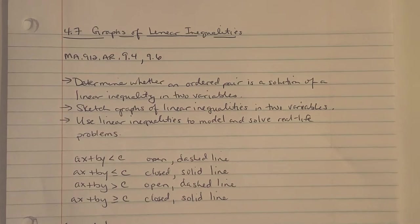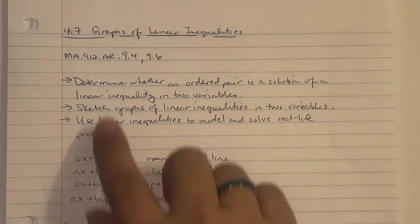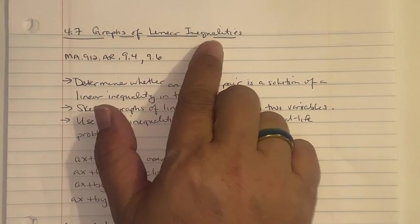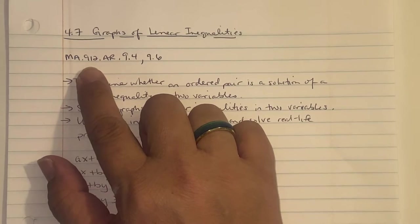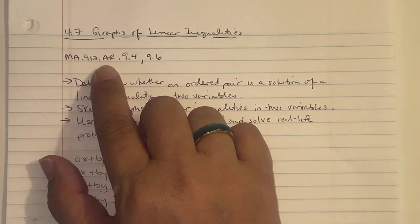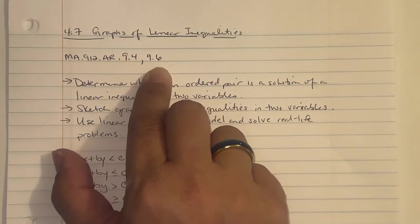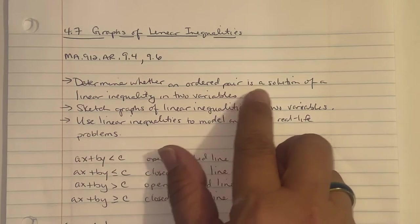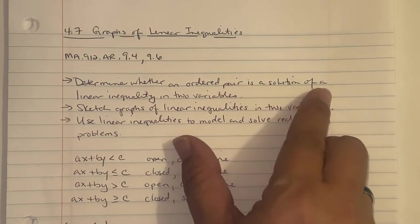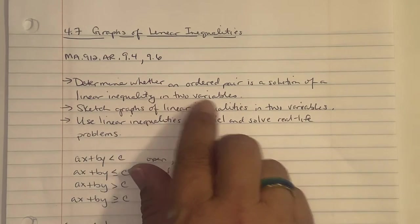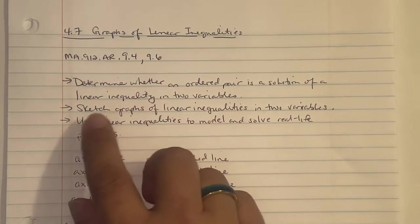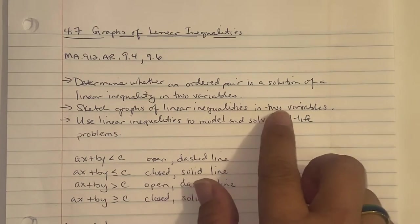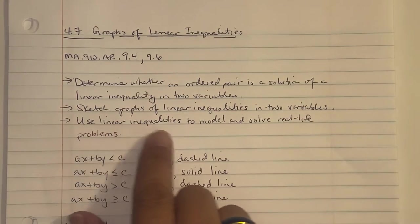4.7 Graphs of Linear Inequalities. We're doing MA 912, AR 9.4 and 9.6. The objectives are: determine whether an ordered pair is a solution of a linear inequality in two variables, sketch graphs of linear inequalities in two variables, and use linear inequalities to model and solve real-life problems.